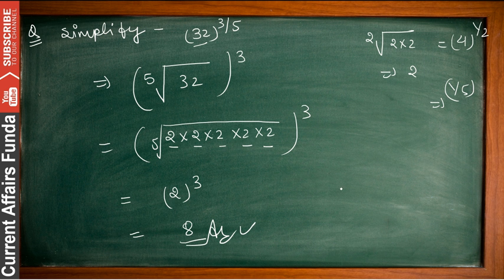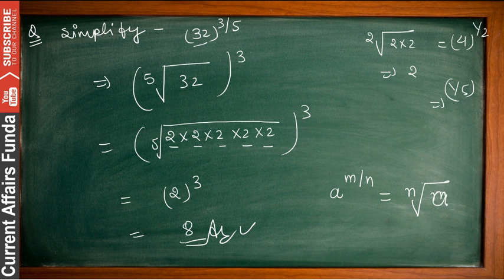The generalized formula is: a to the power m divided by n equals the nth root of a, raised to the power m. Keep this written down. Now suppose you have a question like simplify 8 to the power minus 2 by 3.